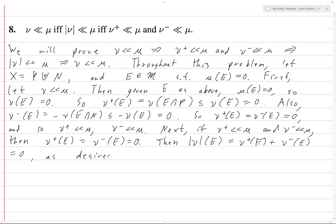Finally, if total variation of ν is absolutely continuous with respect to μ, then ν⁺ of E plus ν⁻ of E equals zero. That's of course assuming E is like this. And so we got two positive things here who sum zero.